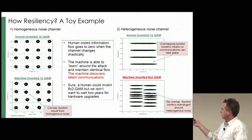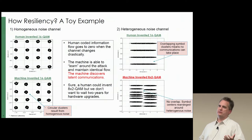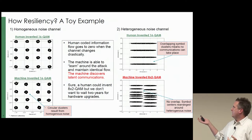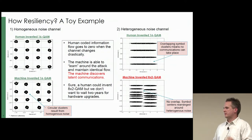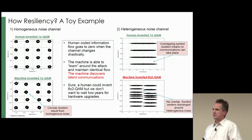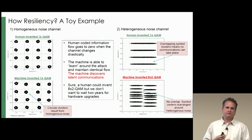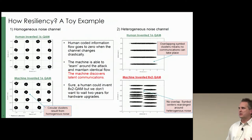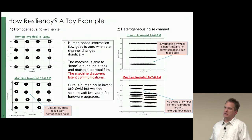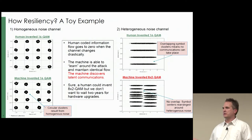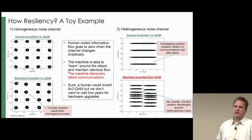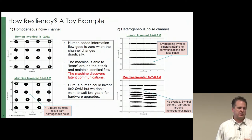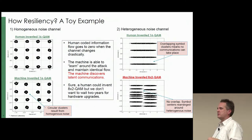With correlated noise where the noise is stronger in one dimension than another, 16QAM fails completely and no communications take place. However, since the machine was never told what the channel model is, it doesn't care — it just asks what's the best way to transmit four bits per sample in this weird, funky channel. It comes up with an adapted constellation, showing how a machine can provide resiliency in digital communications by adapting to channel conditions without being explicitly programmed for them.